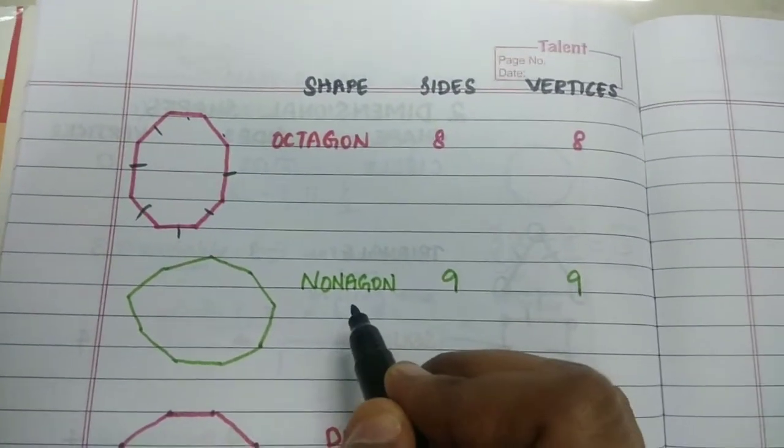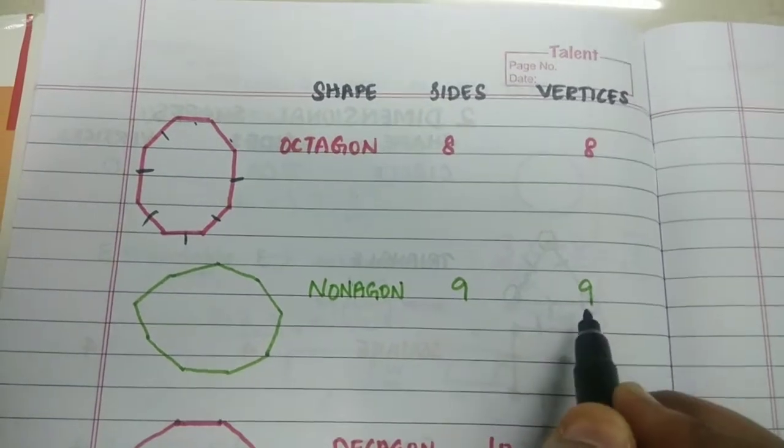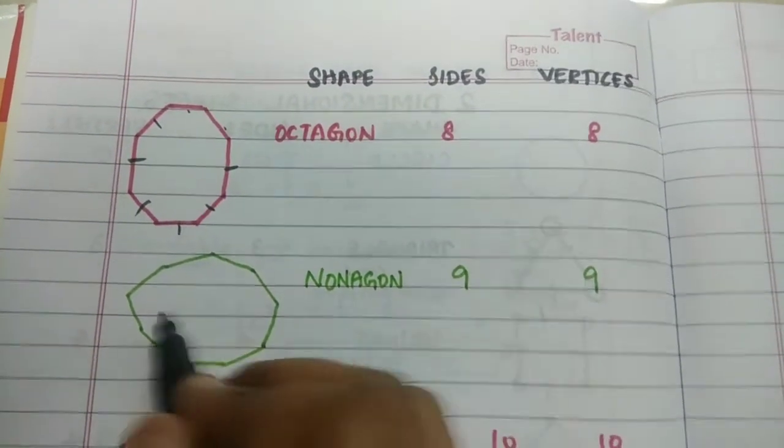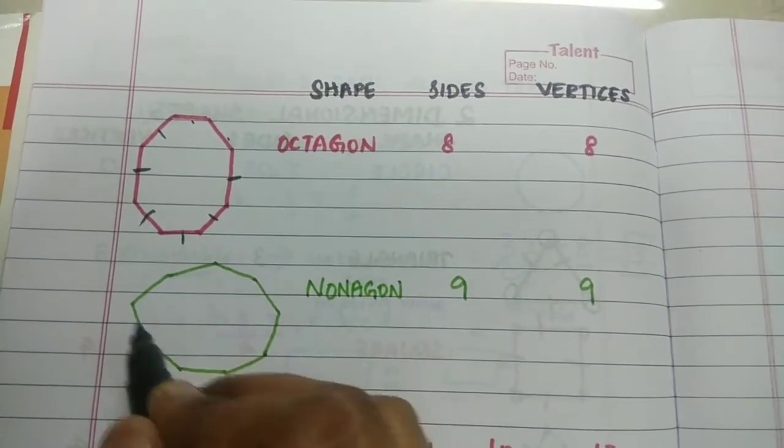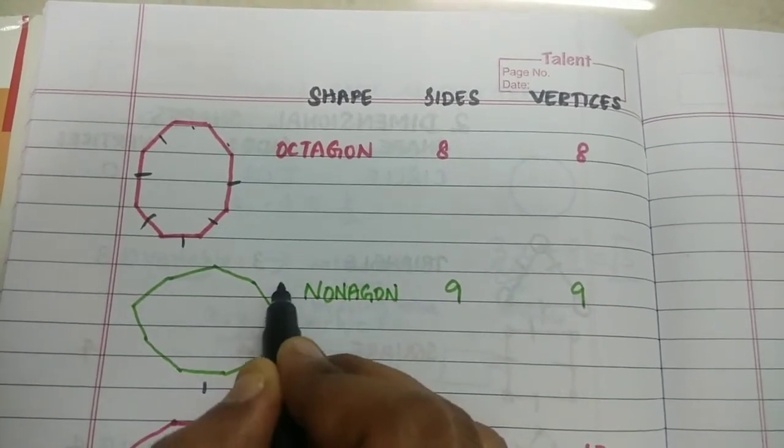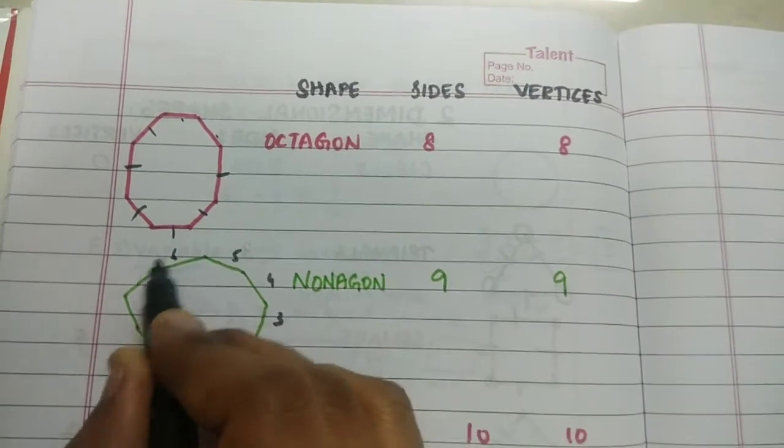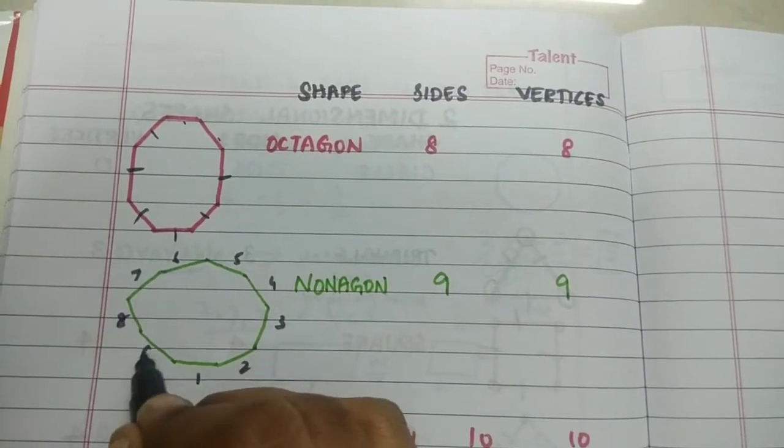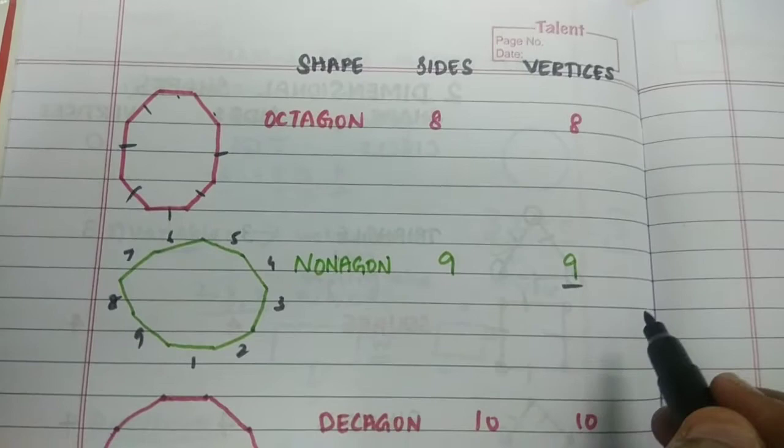Nonagon is a shape which has nine sides and nine vertices. So the drawing may not be perfect as I have drawn it in hand. So one, two, three, four, five, six, seven, eight and nine sides. And you have nine vertices.